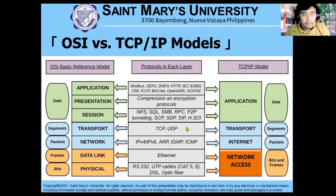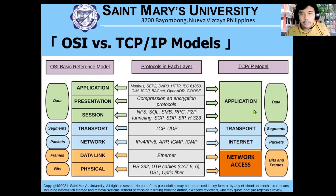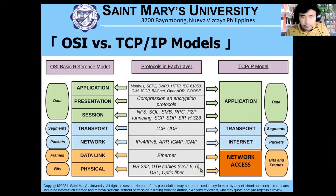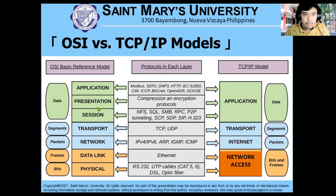Comparing to the TCP-IP model: the application, presentation, and session layers of OSI are combined into one — the application layer in TCP-IP. The TCP-IP model contains only four layers: application, transport, internet, and network access. Transport is the same in both. The network layer in OSI is called the internet layer in TCP-IP. Network access in TCP-IP corresponds to the data link and physical layers in OSI.